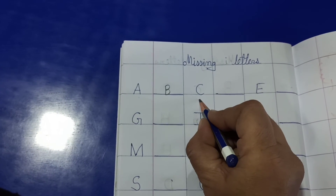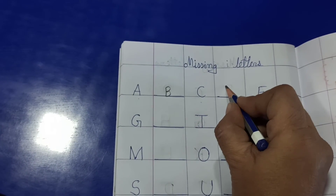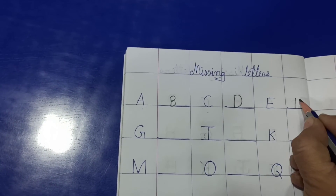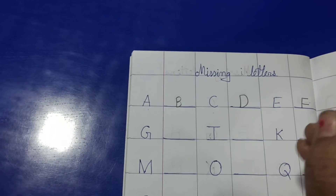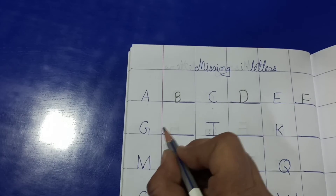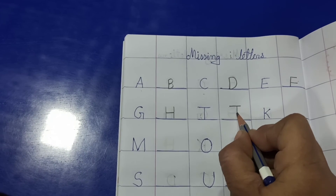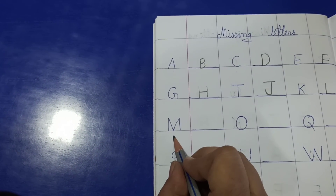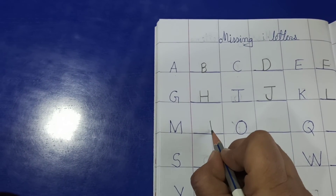Then C. C ke baad kya aata hai? D. D ke baad E likha wa hai. E ke baad? F. Then go to the next line. G. G ke baad? H. Very good. H ke baad? I likha wa hai. I ke baad? J. K ke baad? L. Then M. M ke baad? N.